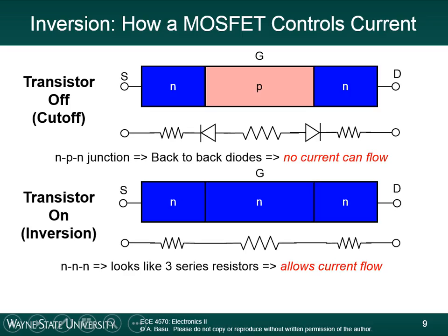From a physics standpoint, the reason it's called a field-effect transistor is because through the electric field — the field effect — you're switching the channel region right under the gate from one type of semiconductor to the other, so that you can conduct current between the source and the drain. That's the basic idea behind a MOSFET.